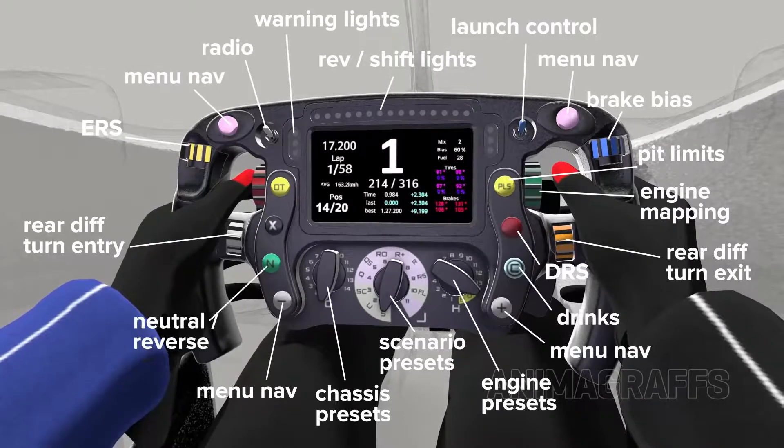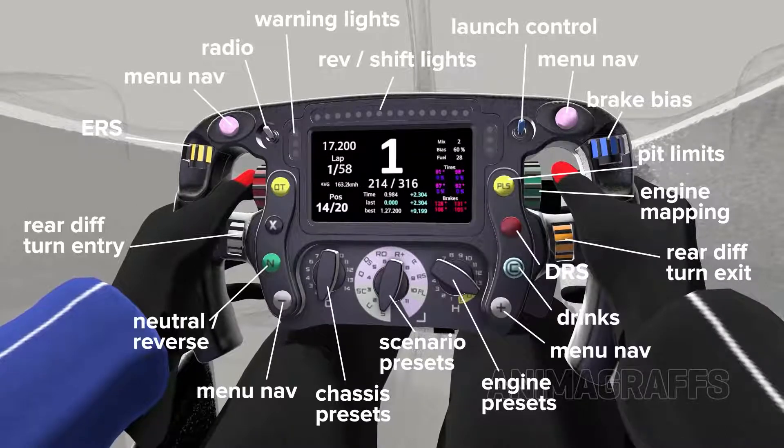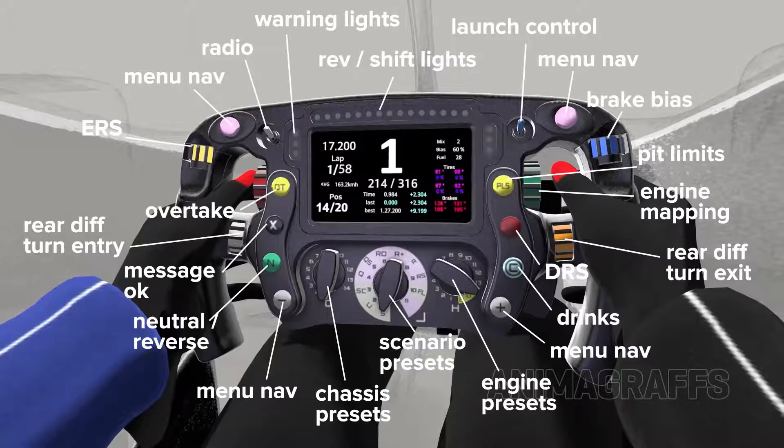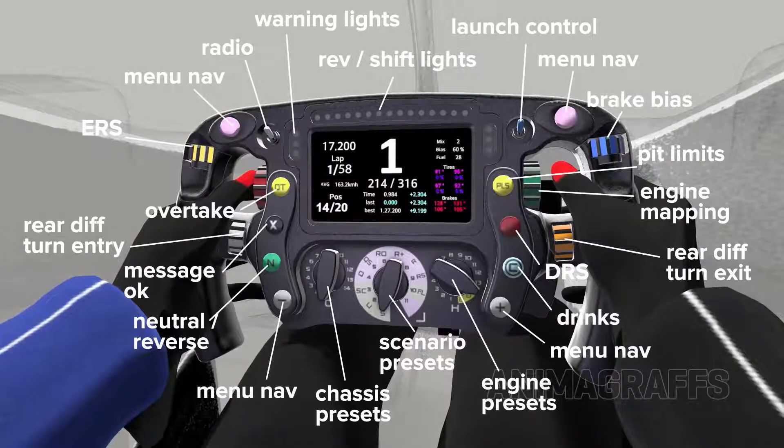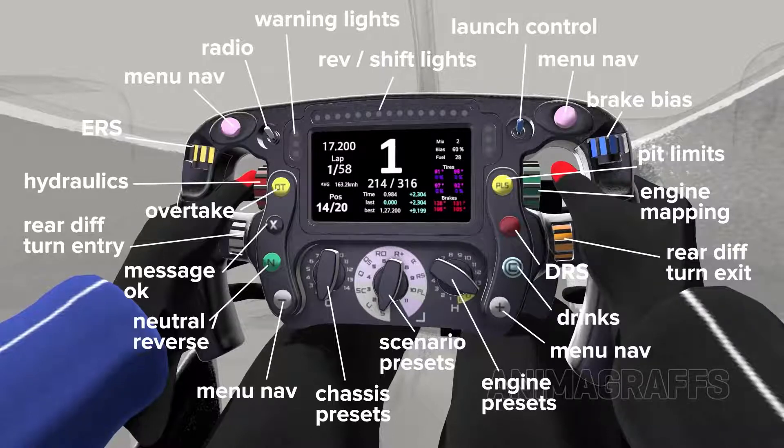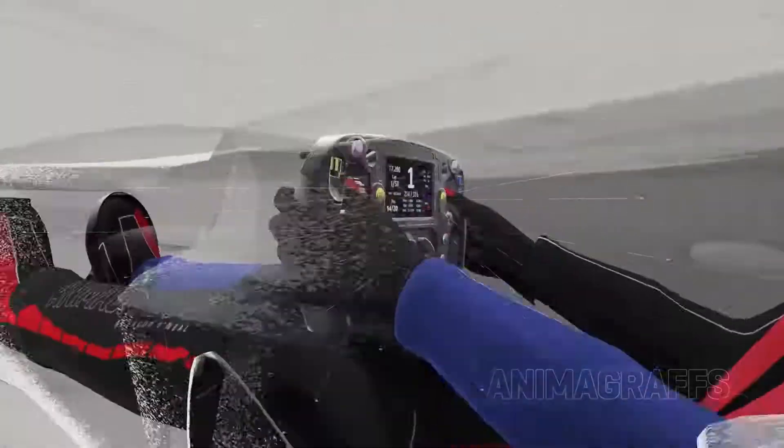The neutral button is for neutral and reverse gears which can't be selected with rear paddle shifters, a message okay button, an overtake button to instantly apply optimal settings for overtaking, and finally a hydraulic settings dial to control the complex hydraulic components spread throughout the car, for example in the gearbox and suspension systems.